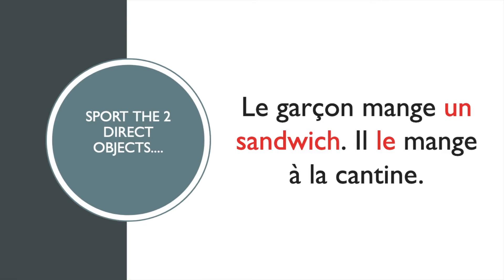If the word that the direct object pronoun stood for was feminine, then you would have 'la.' And if the verb started with a vowel, you would have an 'l'' apostrophe and so on.